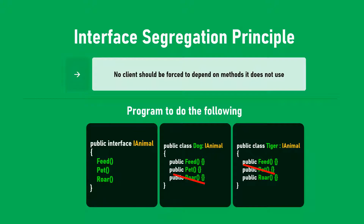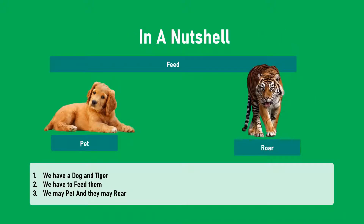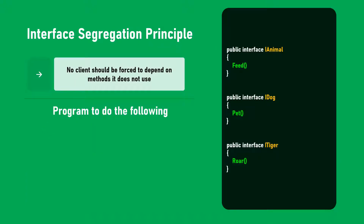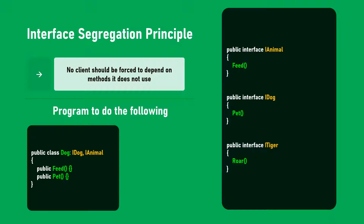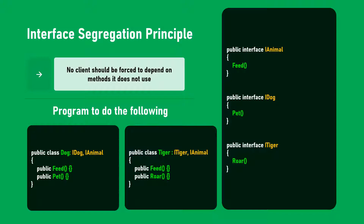A good programmer knows that both dog and tiger need to be fed, but only dog needs to be petted, and only tiger will roar. So he creates three interfaces: IAnimal with feed, IDog specific to dog, and ITiger specific to tiger. The Dog class implements IAnimal and IDog, getting feed and pet. The Tiger class implements IAnimal and ITiger, getting feed and roar. This is how a good programmer applies Interface Segregation.